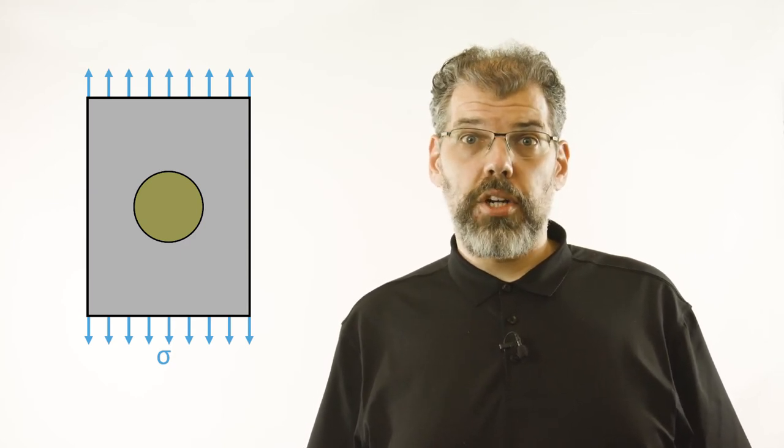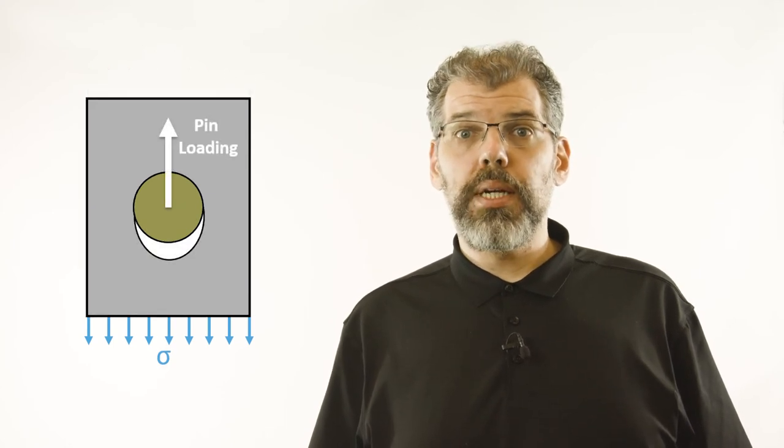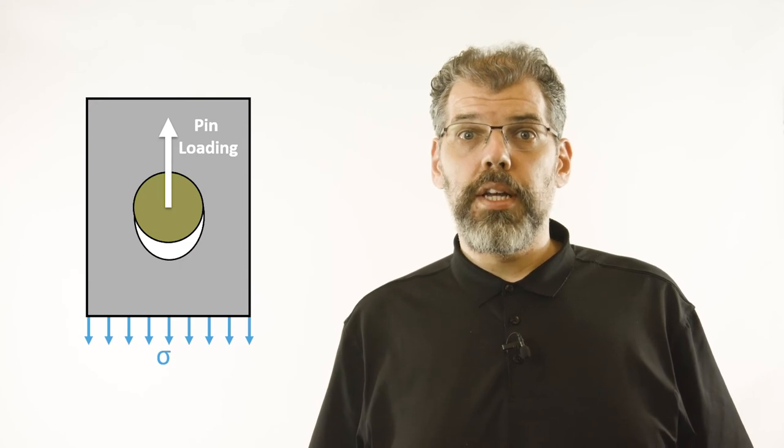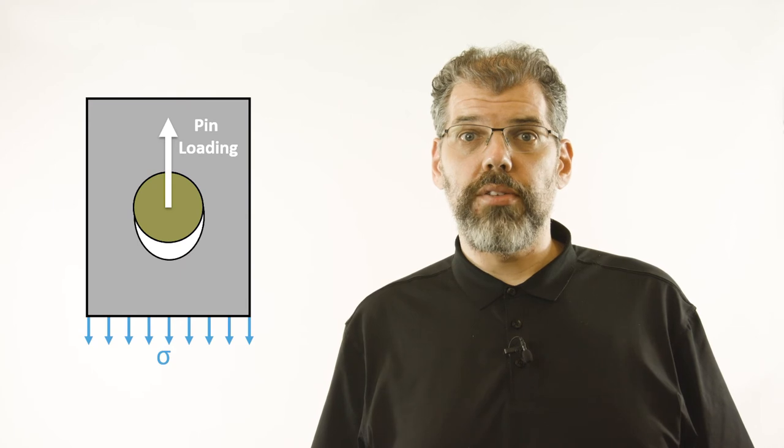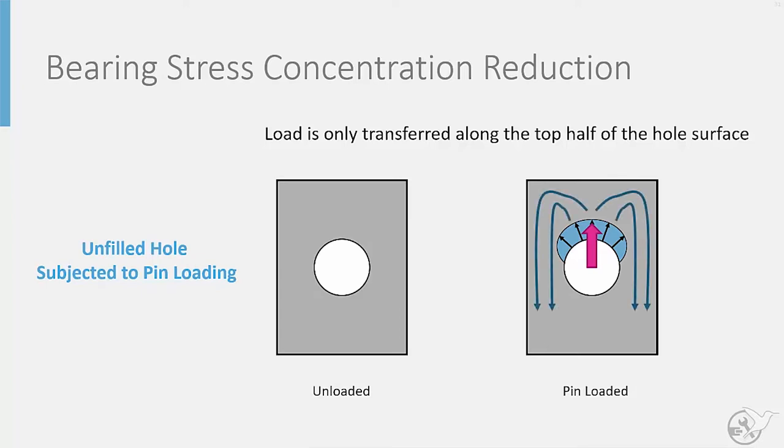Tension loading within the plate is not the only loading affecting the stress concentration around the fastener. The fastener itself will introduce a pin loading into the sheet that we refer to as bearing. This bearing load transfer also has its own stress concentration factor that we need to consider. If the fastener hole is unfilled, load transfer between the rivet and the sheets only occurs on one side of the fastener hole. This concentrates the load in the sheet resulting in a large stress concentration.